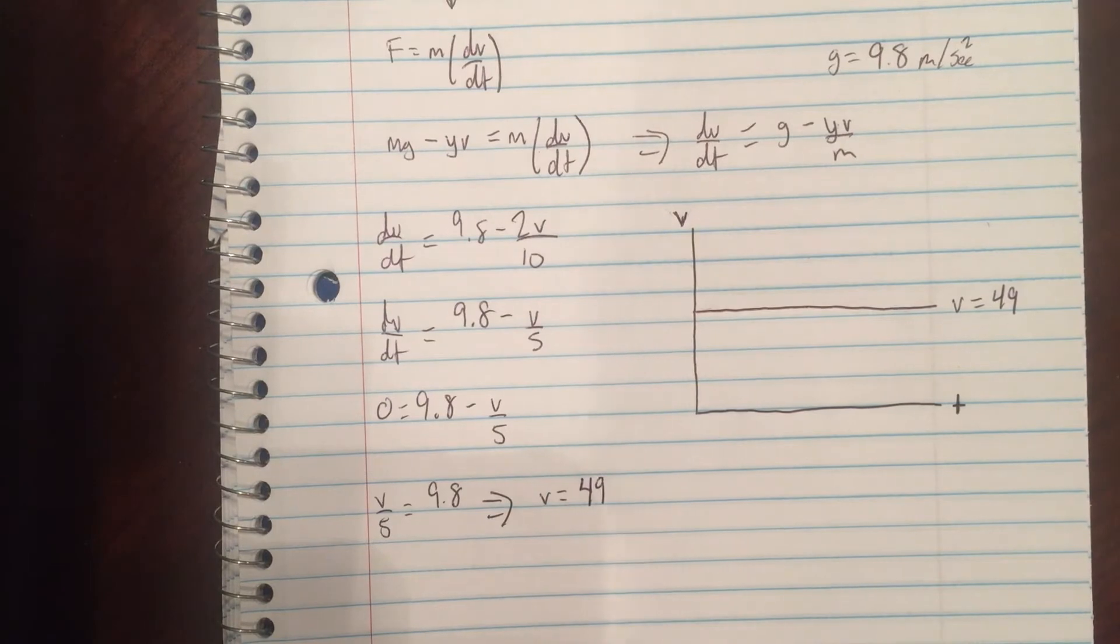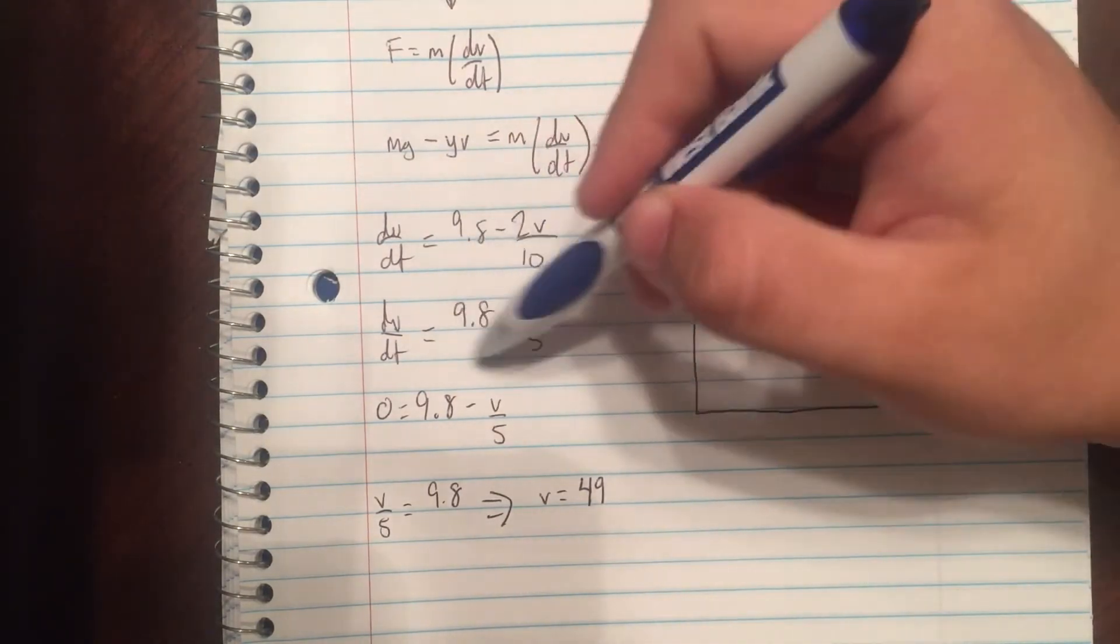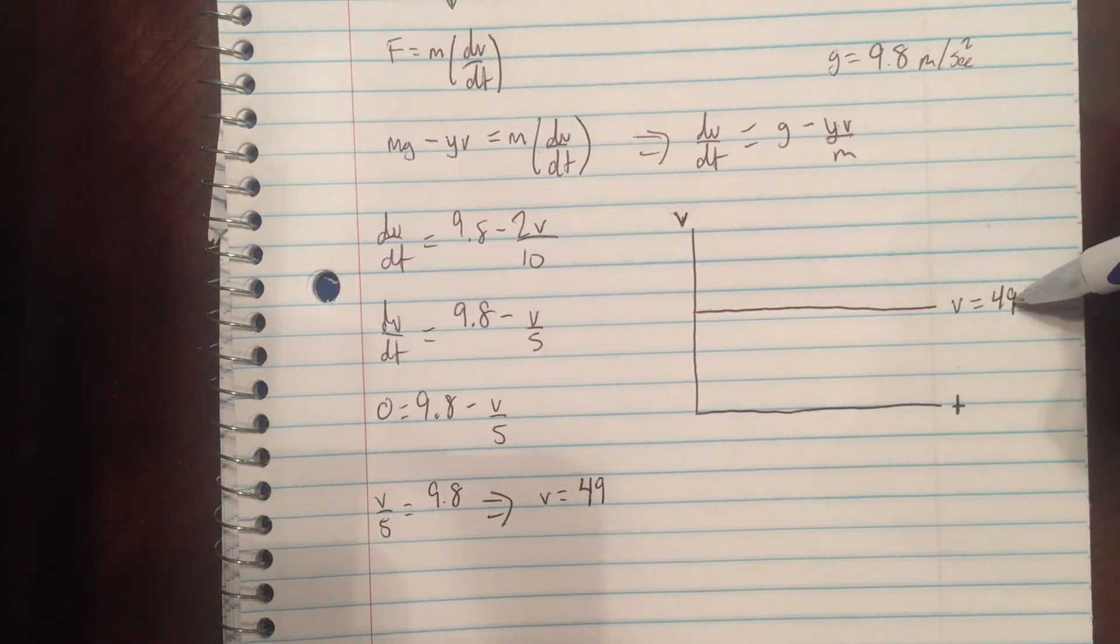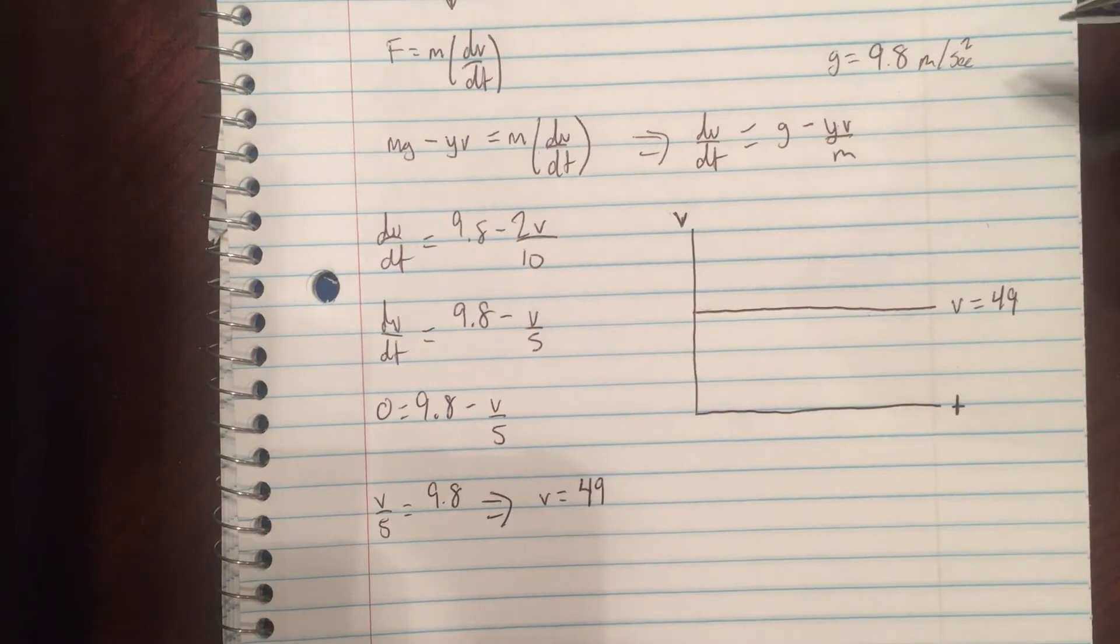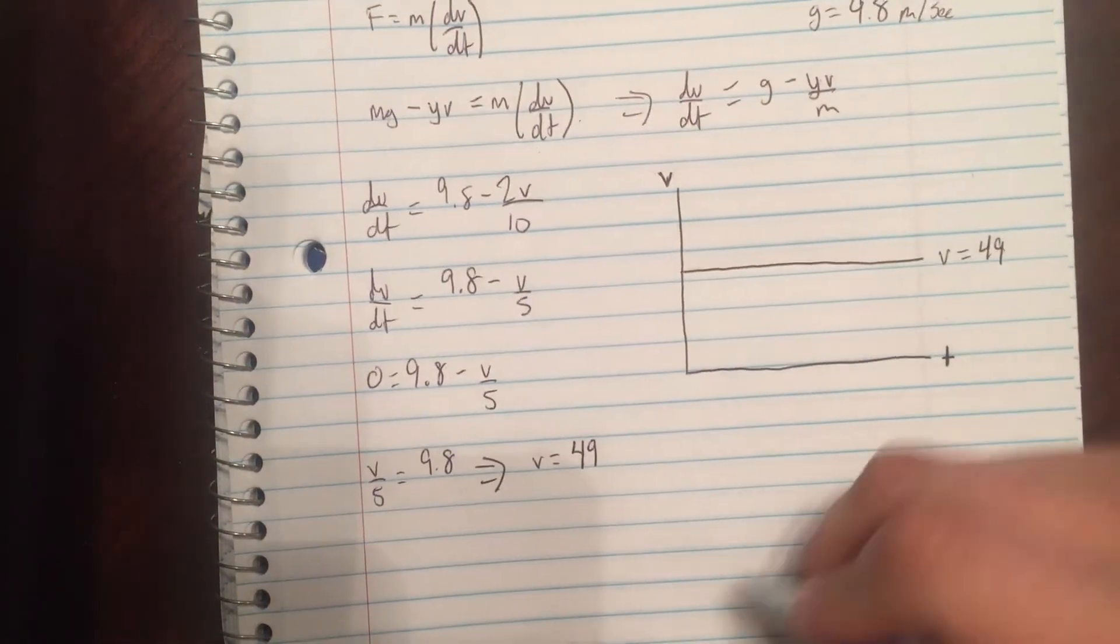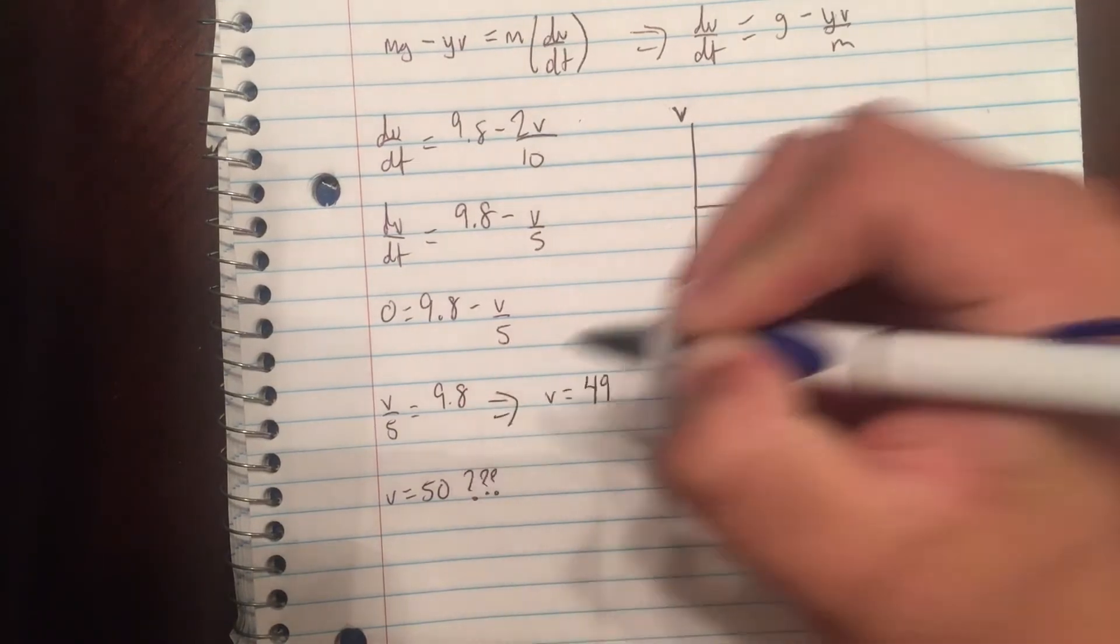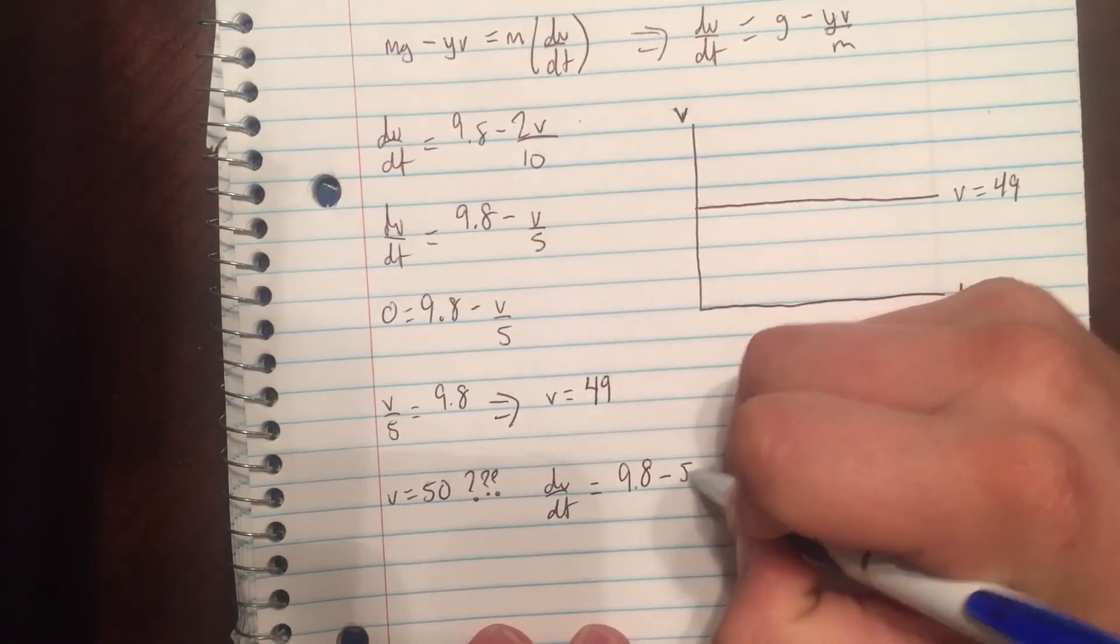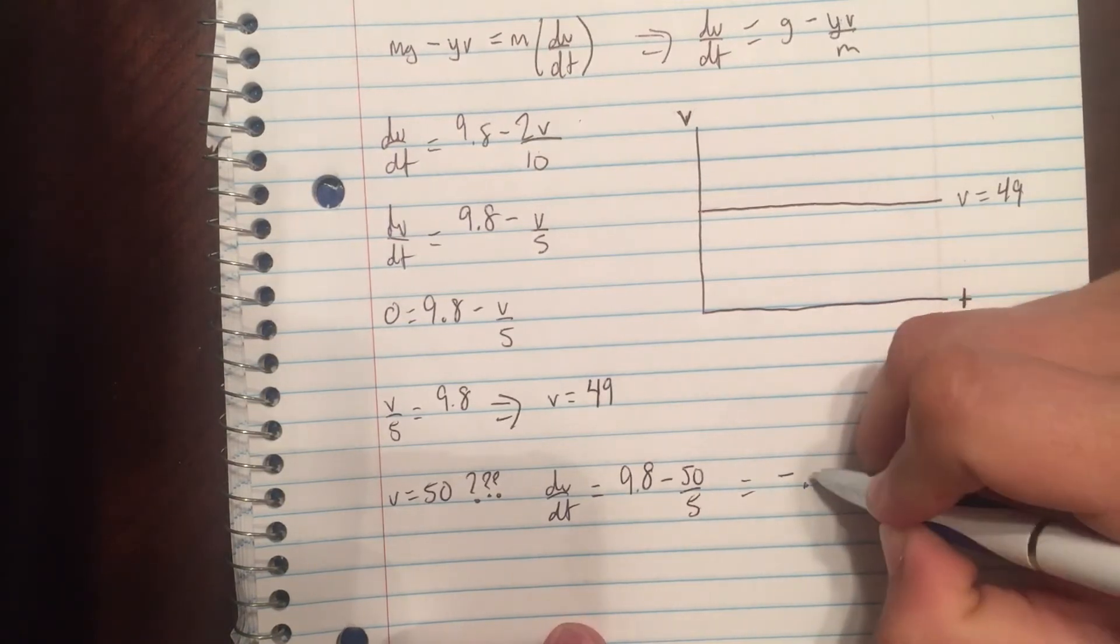Now we're trying to find the slope when it's above it and when it's below it as time goes on. We can't really find as time goes on because we have no t in this function, so we're going to plug in values for v. We should try something above 49 and something below 49. Let's say v equals 50. We're going to have dv dt equals 9.8 minus 50 over 5. We know that's going to be negative because 50 over 5 is 10, so it's negative 0.2.